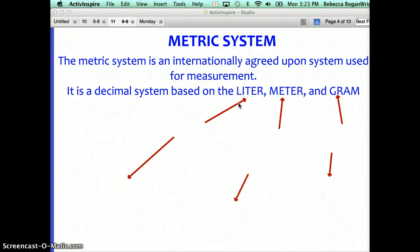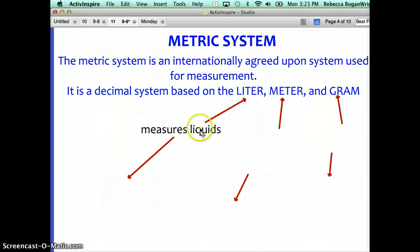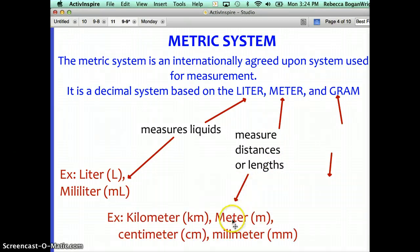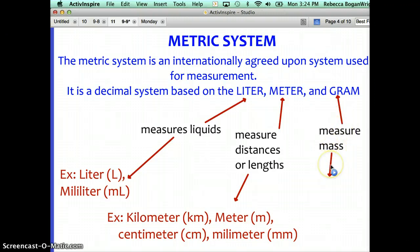You need to know the difference between when we would use each one. A liter measures liquids or volumes, examples would be liters or milliliters. A meter measures distances or lengths, examples would be kilometer, meters, centimeters, millimeters. Somebody might use a gram to measure mass, which is closely related but is not the same thing as weight. In that case we would use the units gram or milligram.